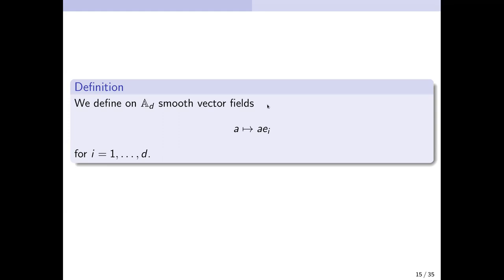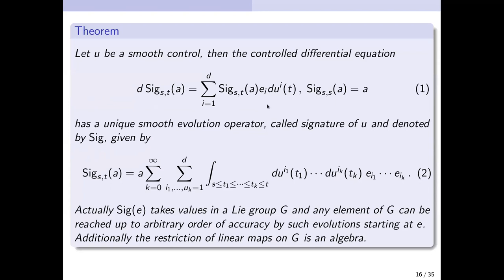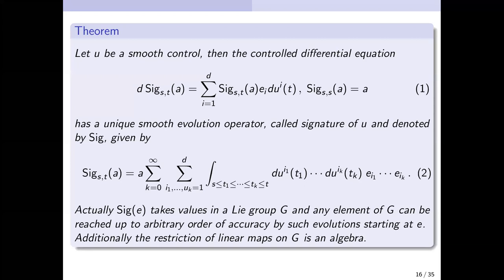We then consider a controlled linear ODE on this algebra — the signature equation. The state space is the algebra, which is infinite-dimensional, but one can formulate this coordinate by coordinate. The solution is given by the power series where at each level one has the iterated integrals of order i₁ up to iₖ associated with the product e_{i₁}⋯e_{iₖ}. This infinite power series is the solution of the previous equation.